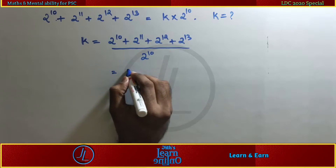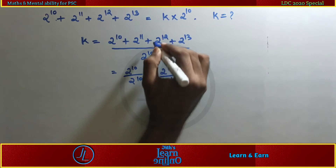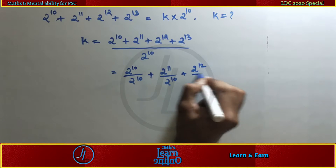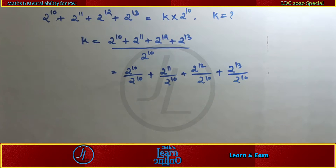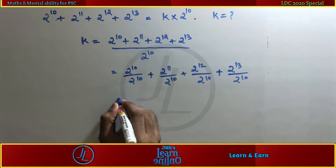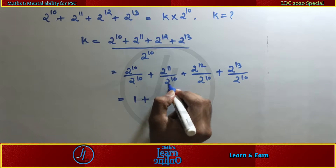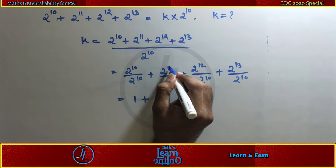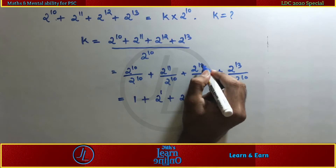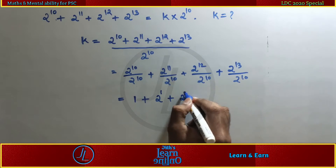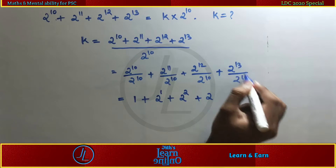We can split this as: 2 raised to 10 divided by 2 raised to 10, plus 2 raised to 11 divided by 2 raised to 10, plus 2 raised to 12 divided by 2 raised to 10. Using the rule, the power is numerator minus denominator: 11 minus 10 equals 1, giving 2 raised to 1 equals 2. Numerator power 12, denominator power 10: 12 minus 10 equals 2, giving 2 raised to 2. Numerator power 13, denominator power 10: 13 minus 10 equals 3, giving 2 raised to 3.